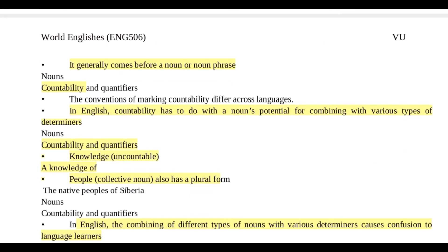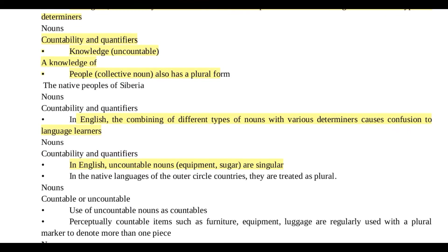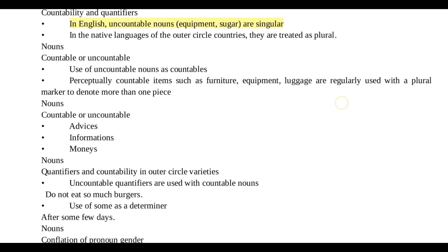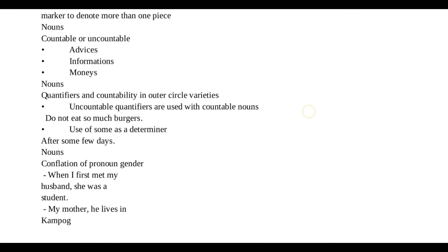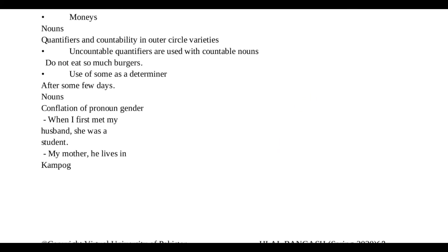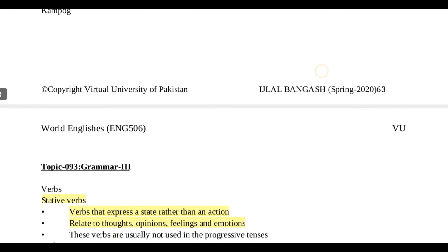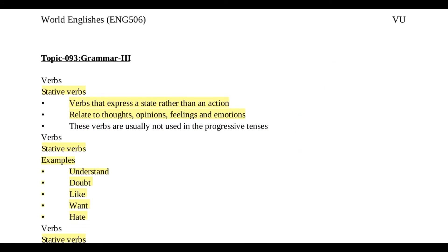آپ لوگوں کو quantifiers کا پتا ہونا چاہیے اور countability کا بھی — nouns دو طرح کے ہوتے ہیں: countable اور uncountable۔ Countable وہ جنہیں ہم count کر سکتے ہیں، اور knowledge، feelings، thoughts، emotions — یہ singular ہیں لیکن uncountable ہیں۔ Uncountable اور countable nouns کی examples دی گئی ہیں — آپ لوگوں نے انہیں ایک دفعہ read کرنا ہے۔